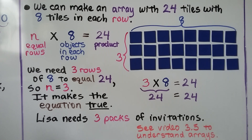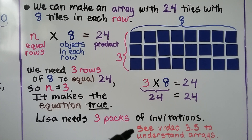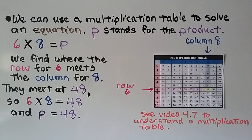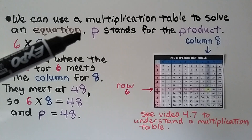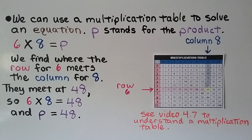If you don't understand arrays, you can look at this video's description for a link to video 3.5, where we first learned about arrays. We can also use a multiplication table to solve an equation. Here we have a variable p that will stand for the product: 6 times 8 is equal to p.